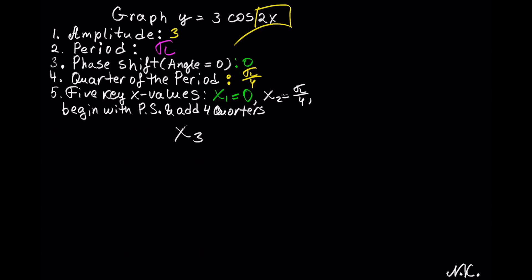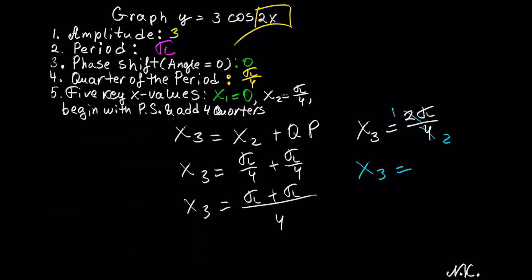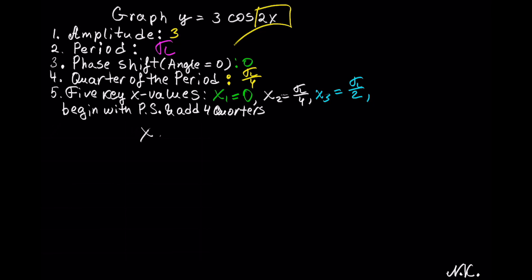x₃ is calculated by taking x₂ and adding a quarter of the period to it. So x₃ equals π/4 plus π/4. We have a common denominator of 4, with π in the first numerator plus π from the second numerator, giving us 2π/4. Both 2 and 4 can be divided by 2, so x₃ equals π/2.